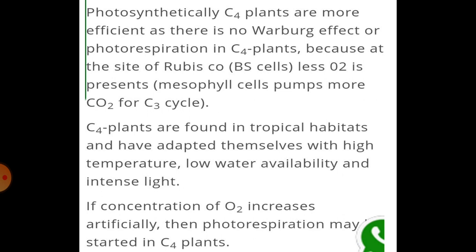The Calvin cycle runs here in the bundle sheath cells, which are located away from the surface, so oxygen concentration is low and carbon dioxide concentration is high. This is why the Calvin cycle runs very easily and food — sugar — is formed efficiently. C4 plants are found in tropical habitats and are well adapted to high temperature, low water availability, and intense light.